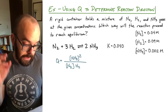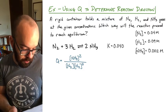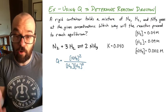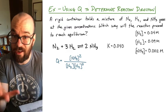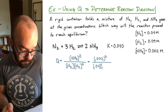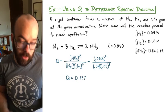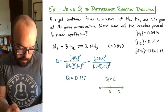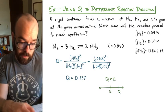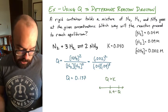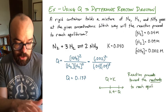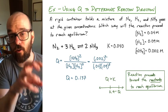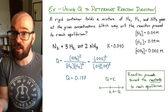The Q expression is [NH₃]² / ([N₂][H₂]³). We substitute in the current concentrations — not equilibrium values, just what the problem gives us right now. When we calculate that out, Q equals 0.137. Comparing to K: 0.137 is greater than 0.040. Plotting on a number line, Q is to the right of K, and Q always moves toward equilibrium — to the left. So the reaction will proceed toward the reactants to reach equilibrium.